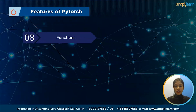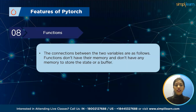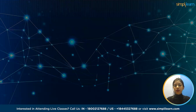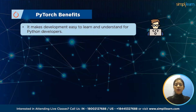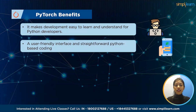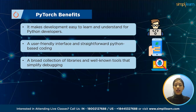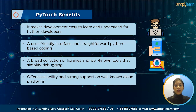Next, functions: the connections between two variables are as follows. Functions don't have their own memory and don't store any state or a buffer. Moving ahead, PyTorch benefits: because its syntax and usage is similar to Python, it makes development simple for Python developers to learn and understand. It has an easy-to-use interface and straightforward Python coding. It includes a large number of libraries and well-known tools that make debugging easier. Additionally, scalability, strong support on well-known cloud platforms, and open-source-focused communities are all available.